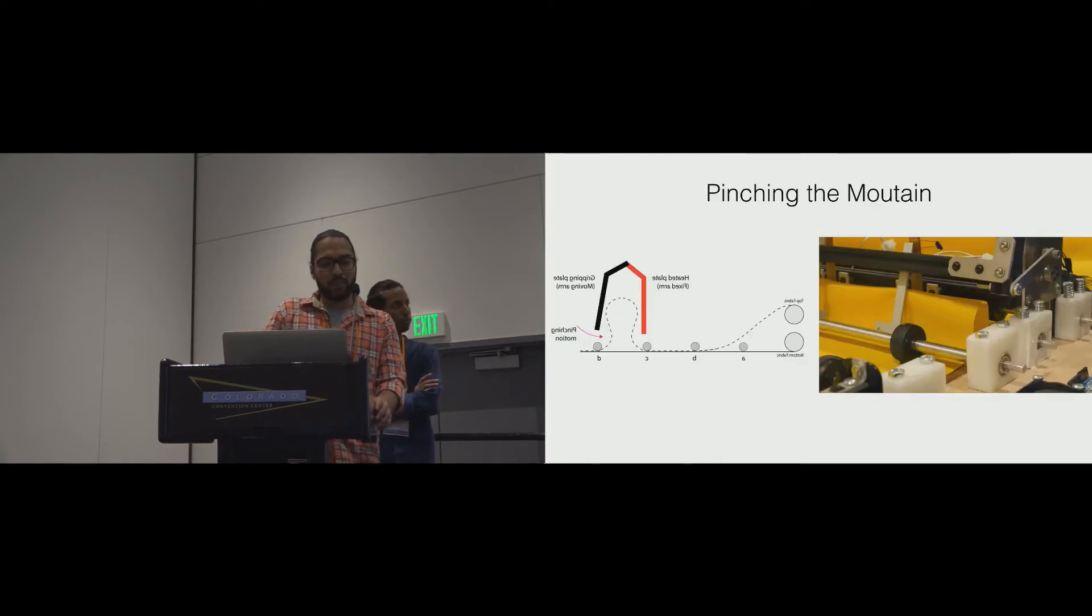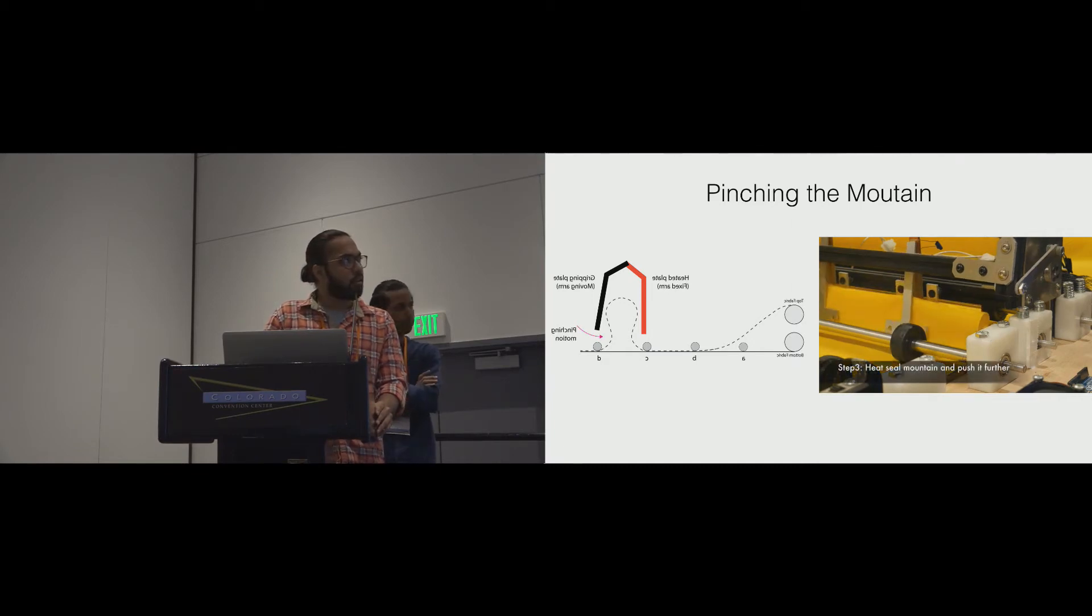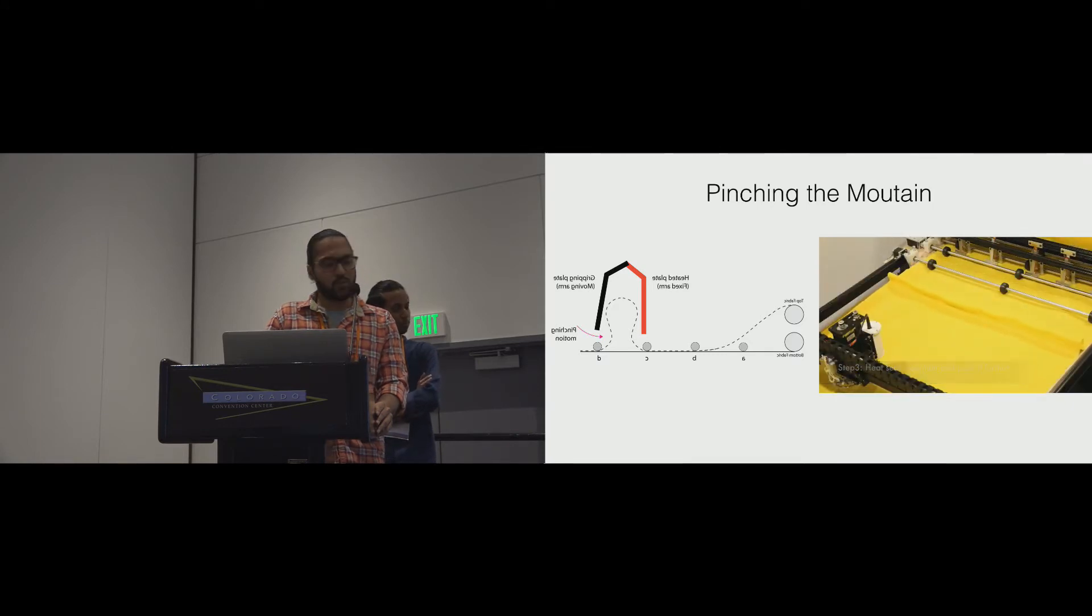Once the mountain is formed, a pincher with a heated plate temporarily seals the mountain. And it is then forwarded to a 2D heat sealing bed for further sealing.